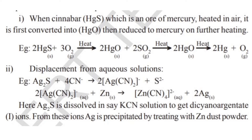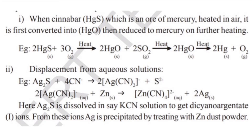Examples: on heating cinnabar (an ore of mercury), it gets converted into HgO. On further heating, it reduces to mercury. The reaction is: 2HgS(s) + 3O₂(g) → 2HgO + 2SO₂(g). Again on further heating: 2HgO → 2Hg + O₂.